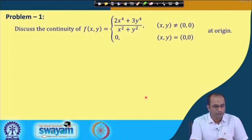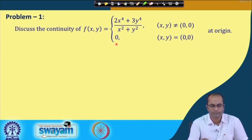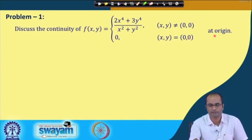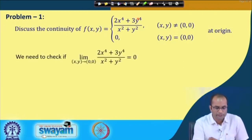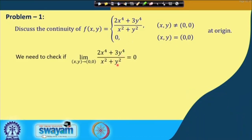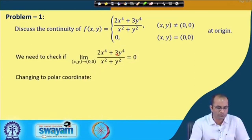Let us go to some examples. Discuss the continuity of f(x, y) = (2x⁴ + 3y⁴)/(x² + y²) when (x, y) ≠ (0, 0), and f(0, 0) = 0. We discuss continuity at the origin. We need to check whether the limit of (2x⁴ + 3y⁴)/(x² + y²) equals 0. If it does, the function is continuous; otherwise it is not. As discussed in the last lecture, changing to polar coordinates is very helpful.